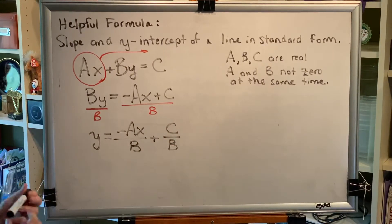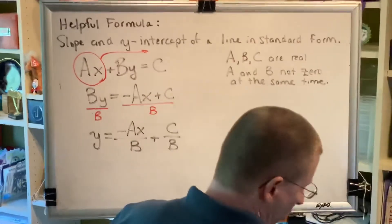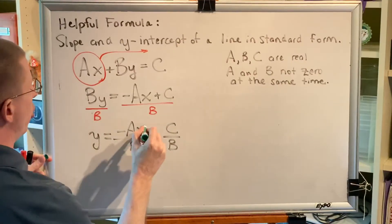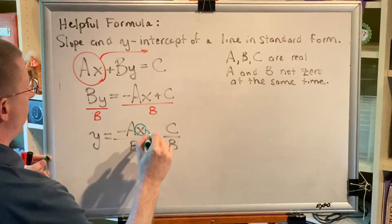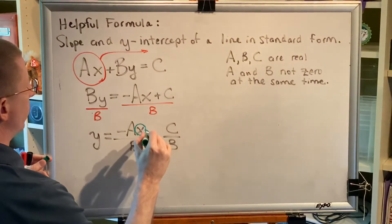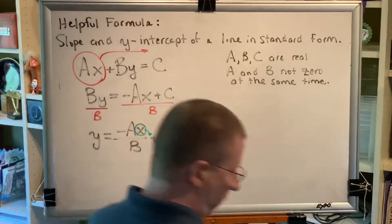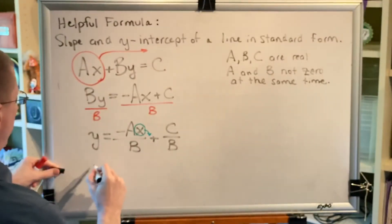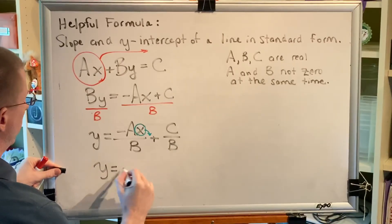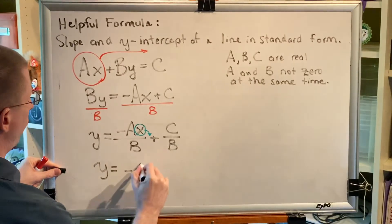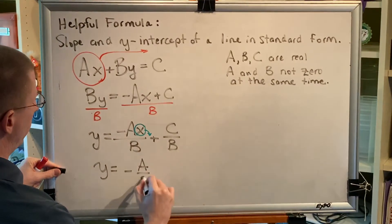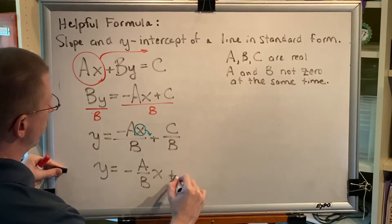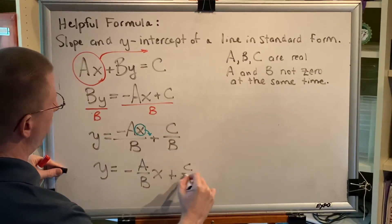A property of fractions allows us to take a factor in the numerator and move it outside the fraction. Applying this gives us y equals negative a over b times x plus c over b.